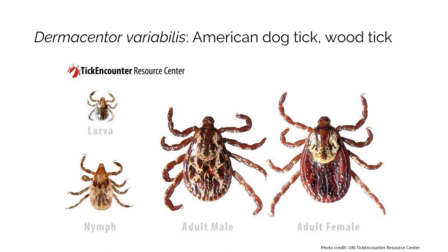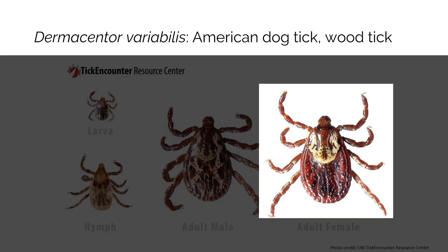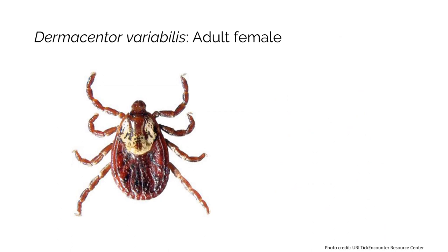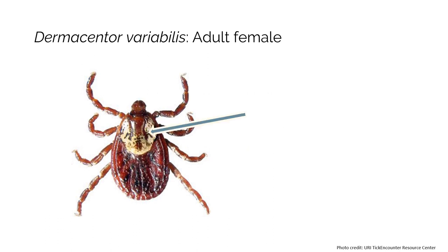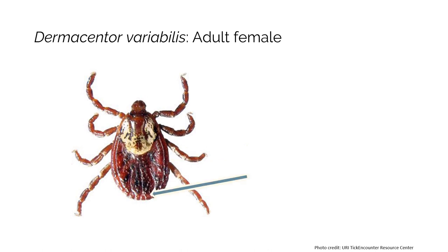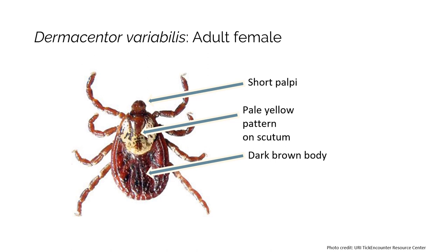Now let's take a look at Dermacentor variabilis, more commonly known as the American dog tick or the wood tick. We will focus on the adult female first. Just like with the black-legged tick, we will examine the mouthparts, scutum, and alloscutum. Unlike the black-legged tick, the American dog tick has mouthparts that are equal in length. The adult female has a pale yellow pattern on the edge of its scutum — Wisconsin folklore calls it their pearl necklace. The alloscutum is bumpy and dark brown. Festoons are also present; these are ridges along the back end of the tick. Short palpi, a pale yellow pattern on the scutum, and a dark brown body with a ridge of festoons on the edge are key in identifying the adult female American dog tick. It's also important to note the American dog tick is much larger than the black-legged tick.